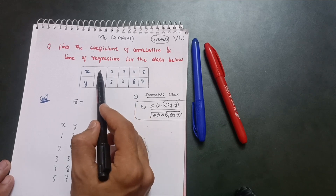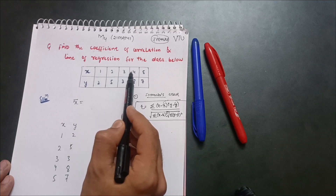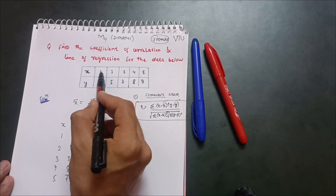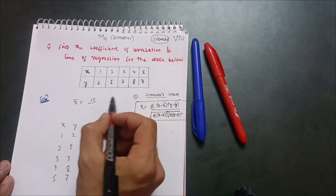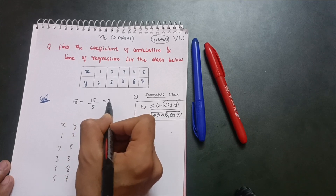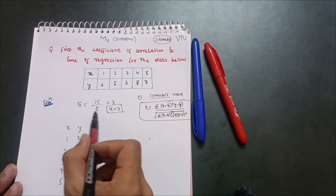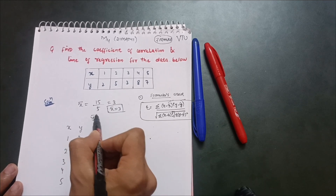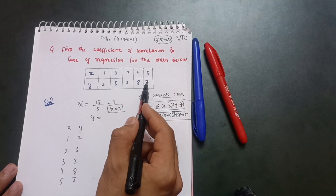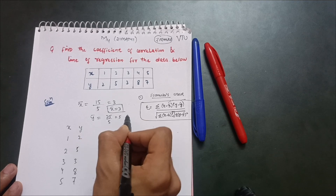To find x̄, add all x values: 1+2+3+4+5 = 15, then divide by the number of terms (5), giving x̄ = 3. For ȳ, add the y values: 2+5+3+8+7 = 25, divided by 5, giving ȳ = 5.